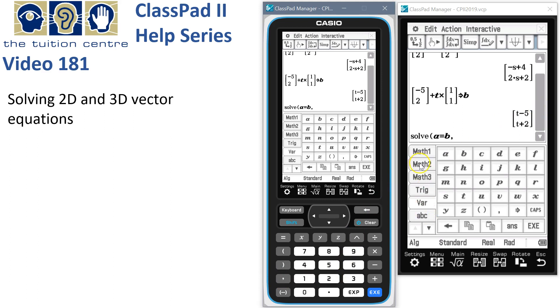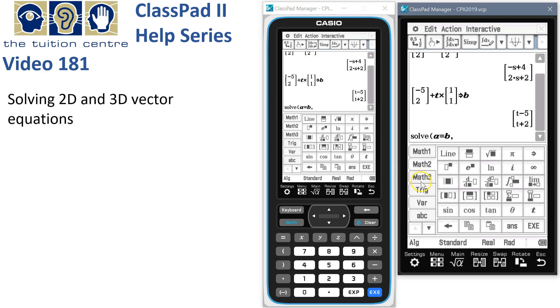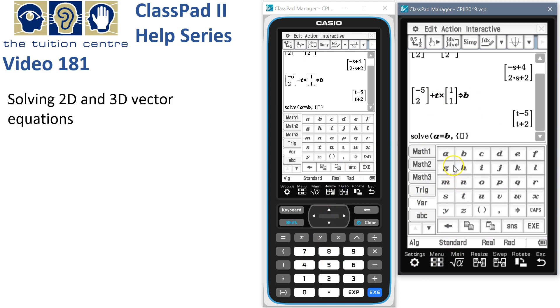We simply want to know when is A equal to B. When are their paths in the same place at the same time. For the two variables we want to solve for, we use curly brackets. We say which variables we want to solve for. Only two dimensions, so the first is S and the second is T.